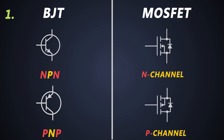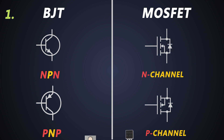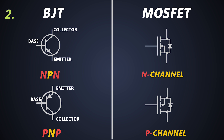Both MOSFETs and BJTs come in the same package, so it is very hard to tell the difference between them without knowing the part number. BJTs have three terminals which are Base, Collector, and Emitter. To turn on a BJT, we provide a signal to the Base, and current starts flowing through the Collector and Emitter.